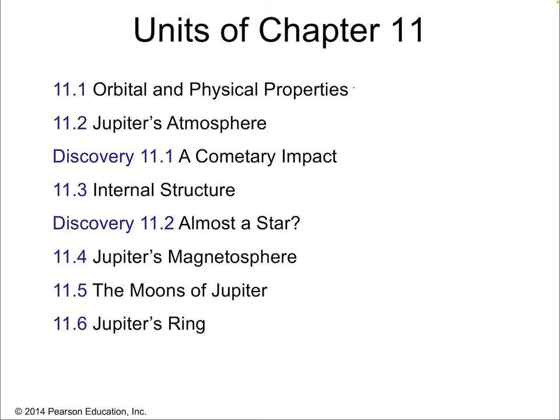We'll talk about the orbital and physical properties of the planet, Jupiter's atmosphere, a cometary impact — a comet crashing into Jupiter, which is a rare opportunity to study the effects of such an impact. We'll talk about the internal structure: what's beneath those clouds, beneath that giant red spot, which we know to be a storm. Was it almost a star? We'll cover Jupiter's magnetosphere, its magnetic field, and the moons of Jupiter, which Galileo first spotted with an early telescope. Those first four moons have a lot of historical importance. And Jupiter even has a ring.